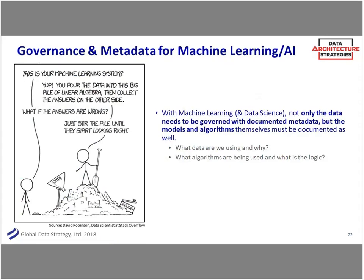There's a whole governance and metadata world around the data you're using as well as the algorithms themselves. Here's a cartoon: 'Is this your machine learning? You pour the data in, do a bunch of linear algebra, and stuff comes out the other side. Well, what if they're wrong? You just mix it around and keep trying until it looks right.' To be fair, to a certain extent that is how they work — but it isn't just willy-nilly. Are we using the right algorithm? The right data set? How are we governing it? Is this a sandbox, or is this going to be operationalized to make decisions on customers — or in the case of a police department, on people's lives?